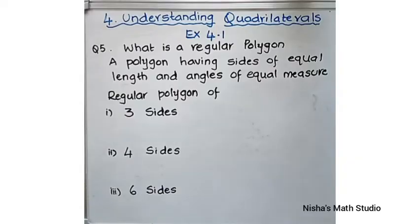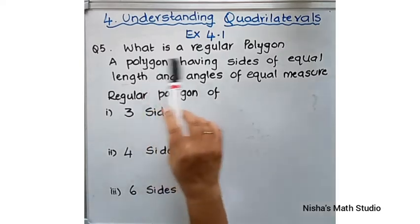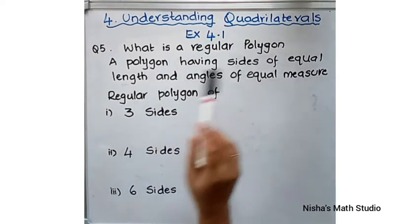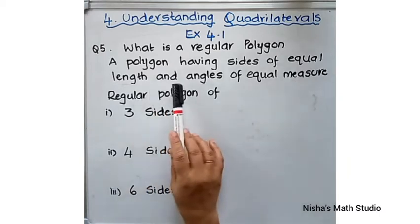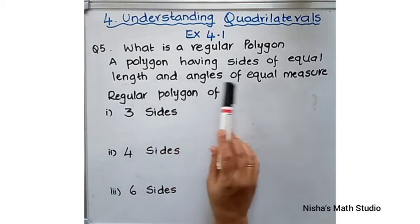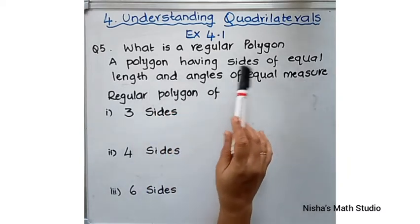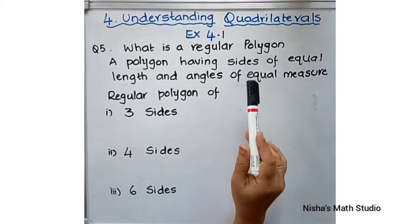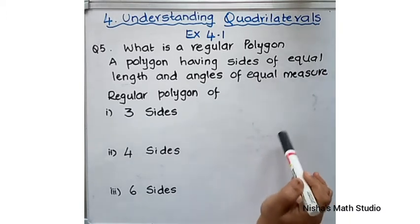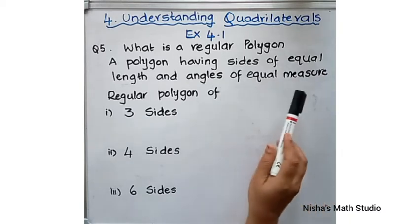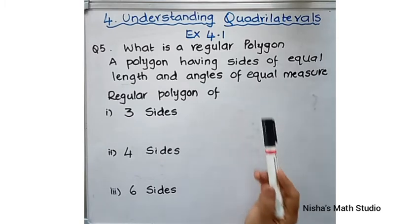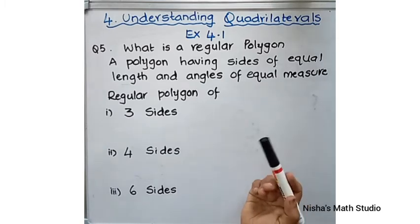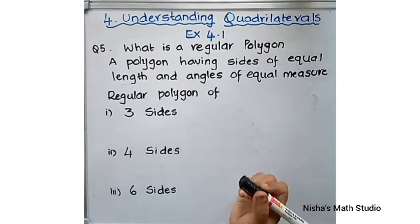Let's see the 5th question of exercise 4.1. What is a regular polygon? A polygon having sides of equal length and angles of equal measure. That is, it should be a polygon where the length of all the sides are the same and the measure of all the angles are the same, which is termed as equilateral and equiangular.